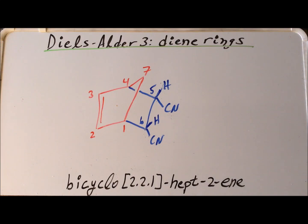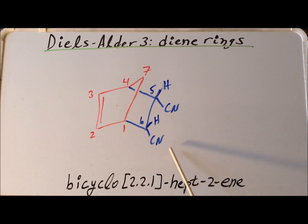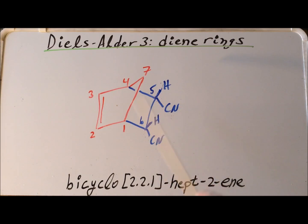If our dienophile is cis-1,2-dicyanoethylene, we end up with a cis-substituted product where both of the cyano groups are on the same side of the ring. Even more importantly, they are both pointing down, so therefore they are the endo-substituents.